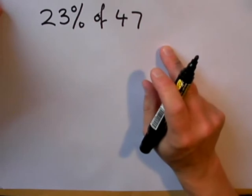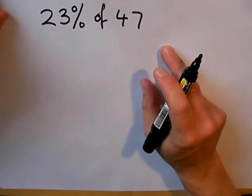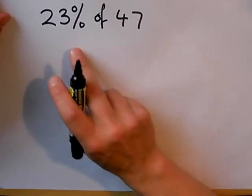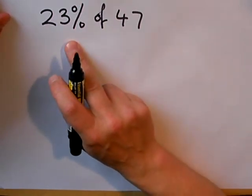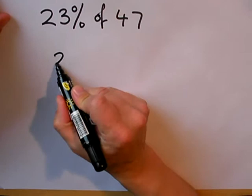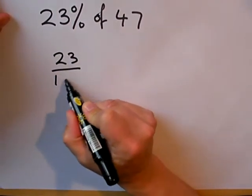The first question I'm going to look at is 23% of 47. Now, the way we need to think about this is what does 23% mean? 23% means, of course, 23 out of 100.